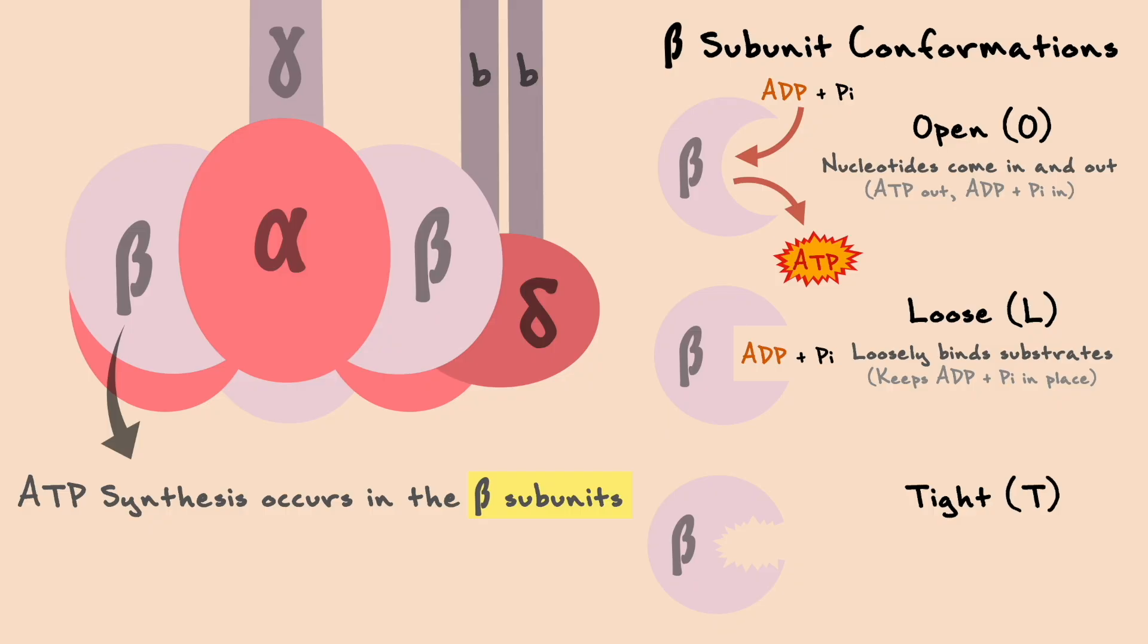Finally, in the tight conformation, the substrates are brought so close that it basically forces the formation of ATP. However, the subunit will have to wait until it returns to the open conformation before it can release that ATP.